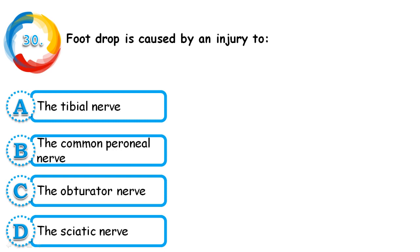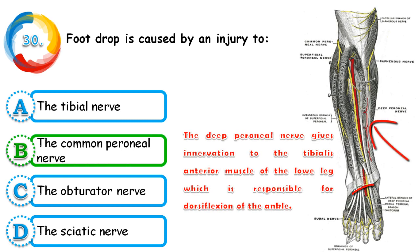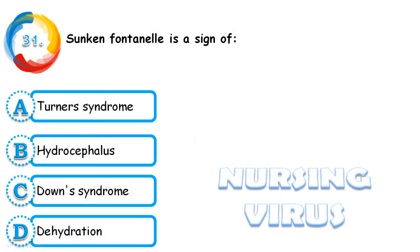Question 30: Foot drop is caused by an injury of which nerve? Options are tibial nerve, common peroneal nerve, obturator nerve, or sciatic nerve. The correct answer is the common peroneal nerve. The deep peroneal nerve gives innervation to the tibialis anterior muscle of the lower leg, which is responsible for dorsiflexion of the ankle. When damaged, the person develops foot drop.